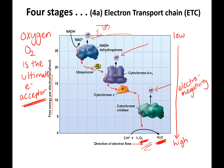Oxygen (O2) is the ultimate electron acceptor, and this is where water is made. This is why you die if you don't breathe: without oxygen, electrons back up and can't move through the chain, the gradient can't form, ATP can't be made, and you have no energy.